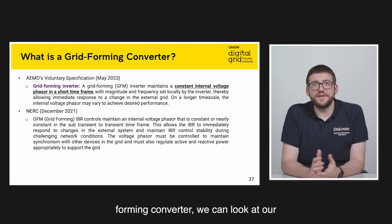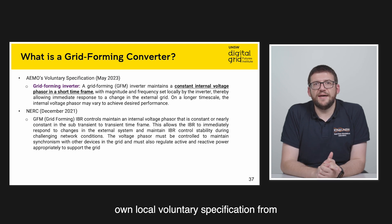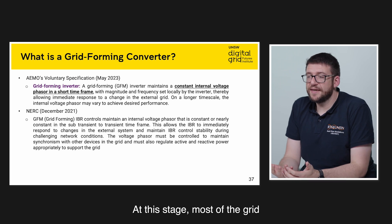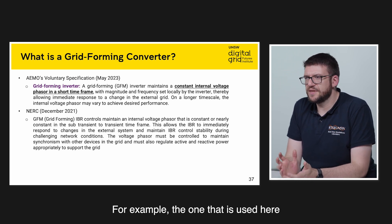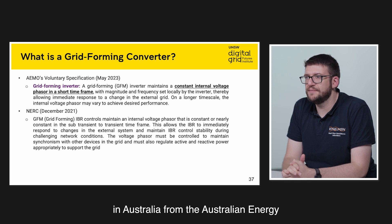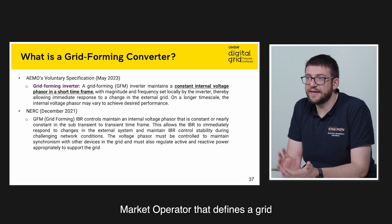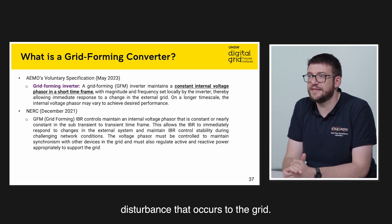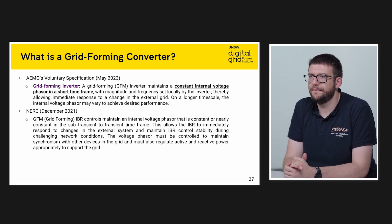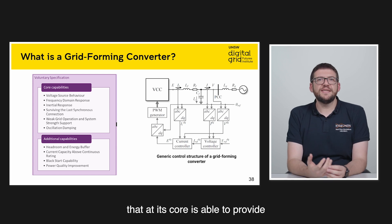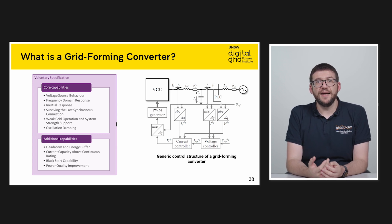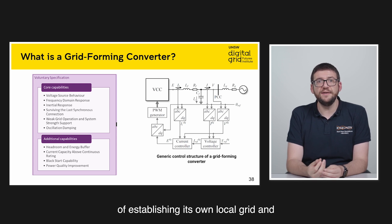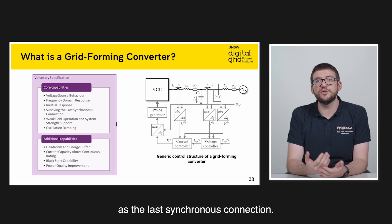In terms of definitions of a grid-forming converter, we can look at our own local voluntary specification from the Australian Energy Market Operator. Most of the grid-forming definitions are voluntary. The Australian Energy Market Operator defines a grid-forming inverter as one that is capable of maintaining a constant internal voltage for a short time following any disturbance that occurs to the grid. This control structure at its core is able to provide frequency and inertial response. As it does not require an external grid to synchronize to, it is capable of establishing its own local grid and maintaining grid synchronization, even as the last synchronous connection.